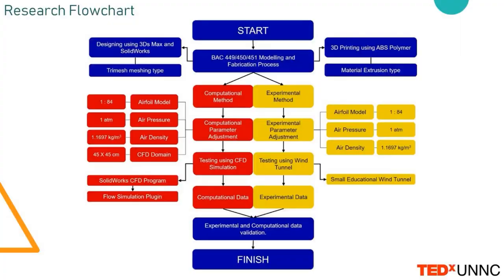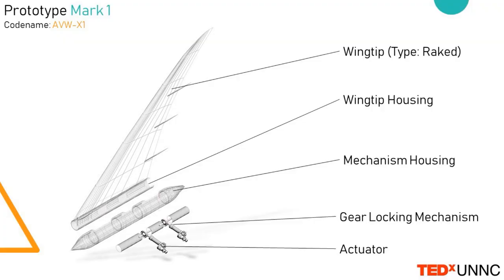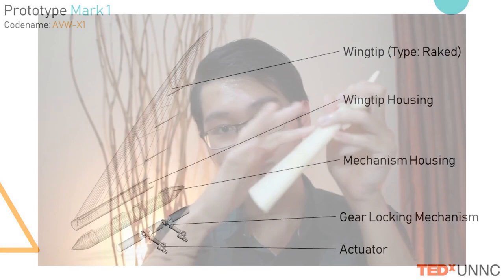I created a simple research flowchart to help me track what needs to be fixed, reiterated, and what I can safely progress past — basically just guidelines. What you're seeing now is actually prototype Mk I. The wingtip type is raked, taken from the Boeing 787 Dreamliner and Boeing 777, and the airfoil profile is taken from the Boeing 737, one of the most common commercial aircraft on the market.